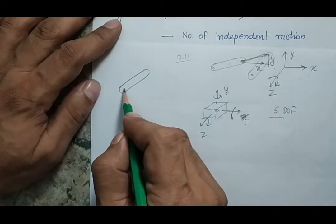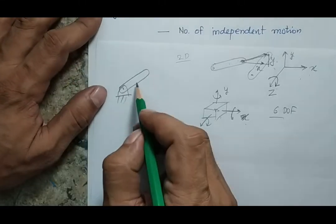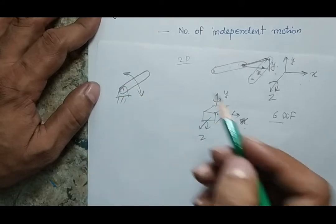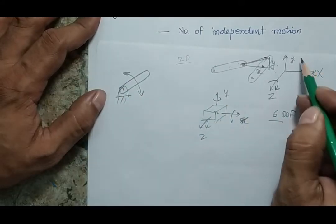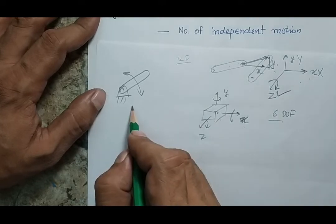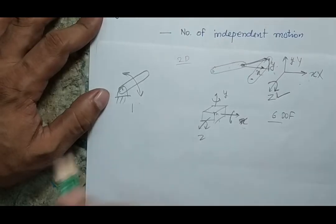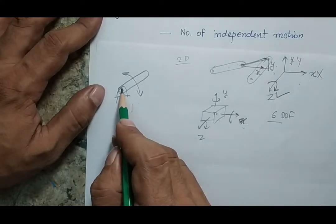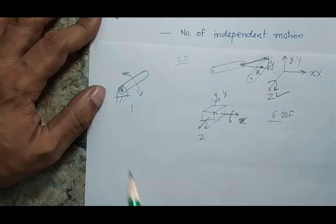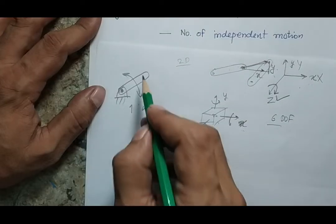Suppose a body is in two-dimensional space and I put a pin joint at a point. The body can now only rotate about that point — the x and y translations are constrained, and only the rotation about the z-axis is free. So the degree of freedom becomes one. This example shows that putting a pin joint restricts two degrees of freedom, leaving only rotation about the z-axis.